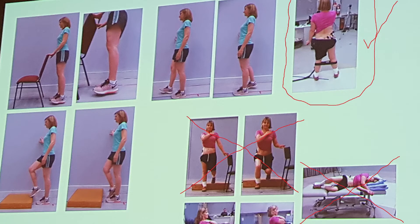The exercises where we were getting the most activity were those in a single leg standing position with resisted abduction and extension — where you're standing on the exercising limb and perhaps taking a theraband out into abduction and extension. That provides high levels of muscle activity for all portions of glute min.